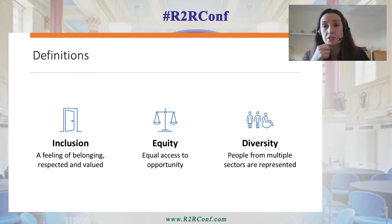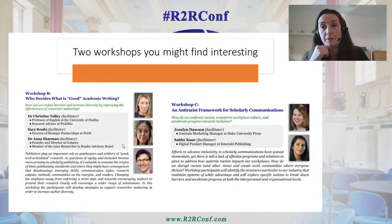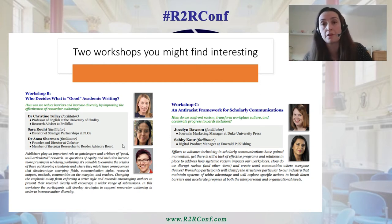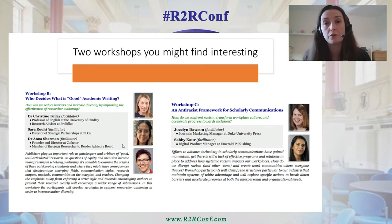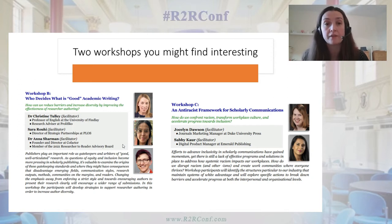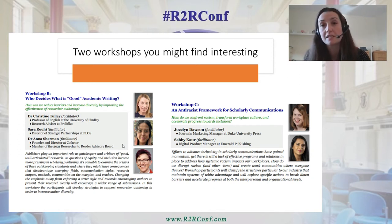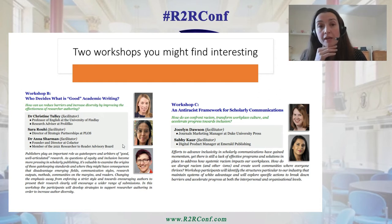Before we get started, just two more things to mention. There are two other workshops today as part of the Researcher to Reader Conference that are linked to today's session. The workshops are running at multiple points throughout the conference, so if you want to attend both, you will have an opportunity to do that. The first is one on inclusive writing — looking at whether traditional publishing gatekeeping standards are actually disadvantaging some important voices. The second workshop is on an anti-racism framework, looking at how we can transform our workplace cultures. Do sign on to those workshops if you're interested.